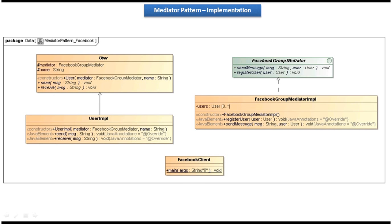This is the class diagram of the scenario which we have just seen. At the top you can see a FacebookGroupMediator interface. It has two abstract methods: the first method is sendMessage and the second method is registerUser. This interface is implemented by the concrete class FacebookGroupMediatorImpl, which provides implementation of registerUser and sendMessage. The registerUser method adds a new user to the particular group. The sendMessage method receives any message shared by a user and sends it to all users registered in that group.